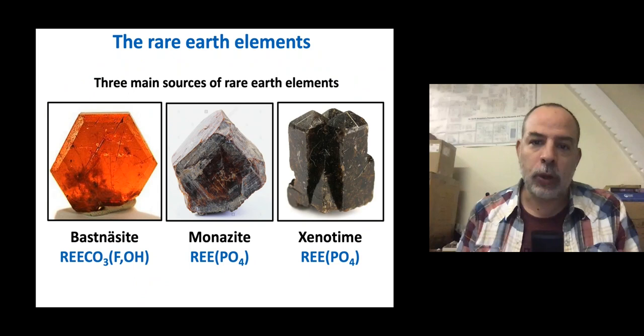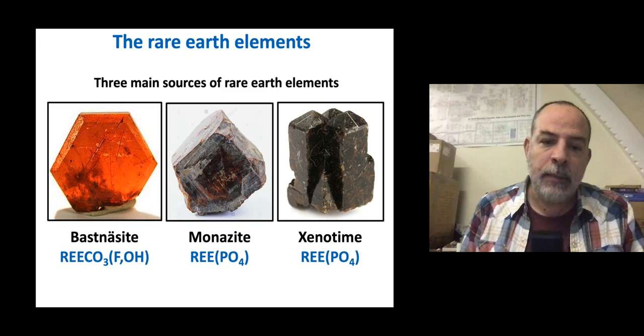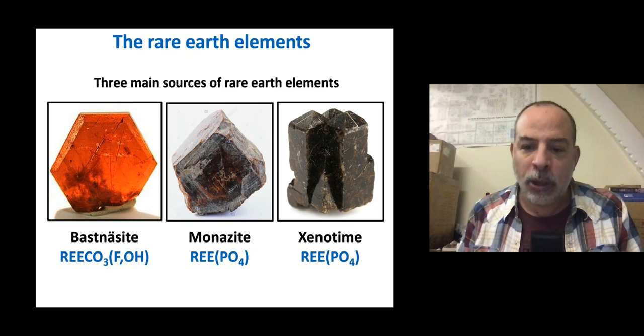There are three main sources of rare earth elements. We extract them from rocks, and in particular we take them from three main minerals. They are named bastnäsite, which is a rare earth carbonate; monazite; and xenotime — and these two are rare earth phosphates.